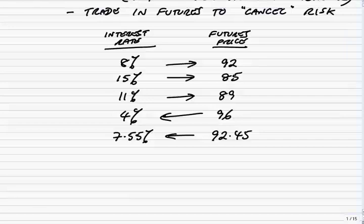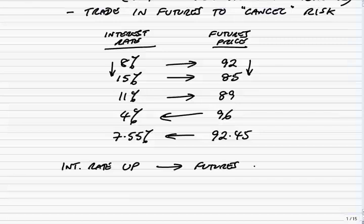As interest rates go up and down, the rate quoted from day to day will change. Equally, we have these futures where the price goes up and down. But notice — and this is going to be very important later — because of the way they're quoted, if the interest rate goes up from 8 to 15, the futures price goes down from 92 down to 85. So interest rates up means futures price down, and obviously vice versa.